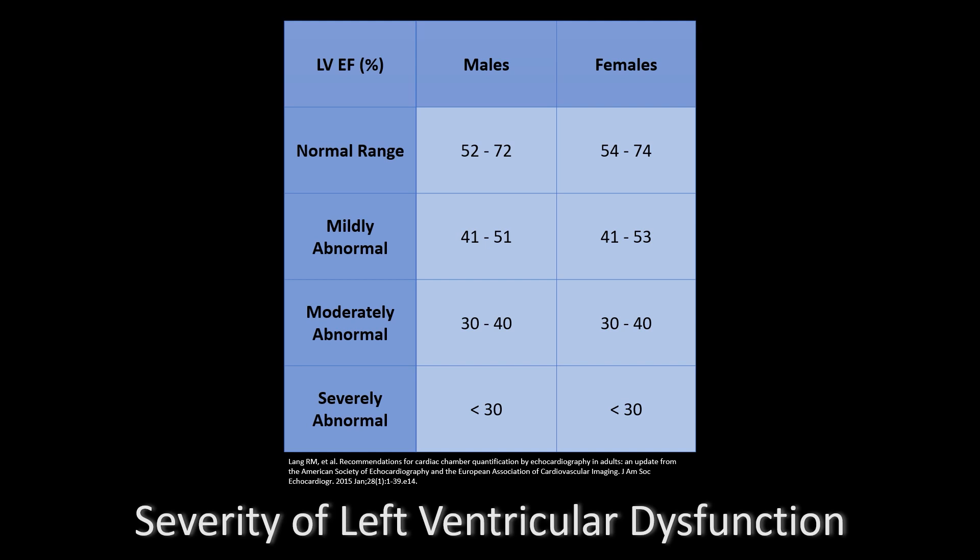Here are the values for what is considered abnormal for the left ventricular ejection fraction. Normal in males is 52 to 72. Mildly abnormal is 41 to 51, moderately abnormal is 30 to 40, and severely abnormal is less than 30%. The values for females are very similar. The normal range is 54 to 74 and the mildly abnormal range is 41 to 53. The moderate and severely depressed ejection fraction thresholds are the same in both females and males.